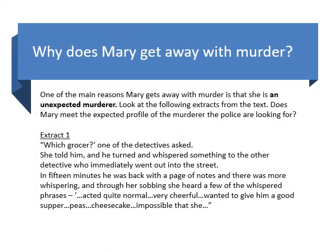So you'll see here at the end of the story that Mary does get away with the murder of her husband. But why is this? Well, one of the main reasons is that she is herself an unexpected murderer. I'm going to look at a couple of extracts from the text. Does Mary meet the expected profile of the murderer the police are looking for? In Extract 1, the detective checks her alibi at the grocer. She told him, and he turned and whispered something to the other detective, who immediately went out into the street. In 15 minutes he was back with a page of notes, and through her sobbing she heard a few of the whispered phrases: 'Acted quite normal, very cheerful, wanted to give him a good supper, peas, cheesecake, impossible that she...' Take a few notes in your jotter now and explain why this particular extract shows that Mary is not considered to be the murderer by the police.